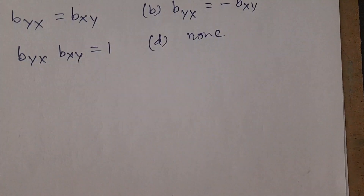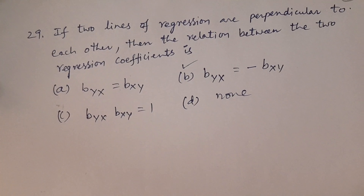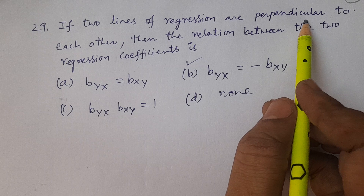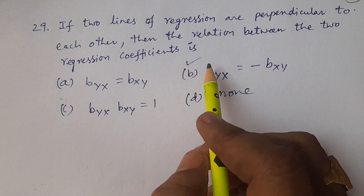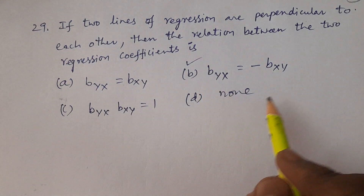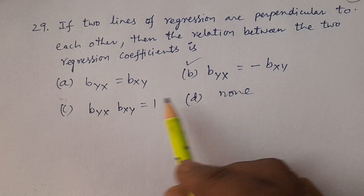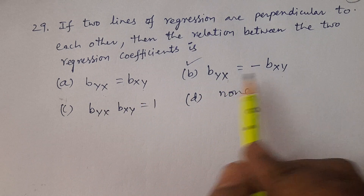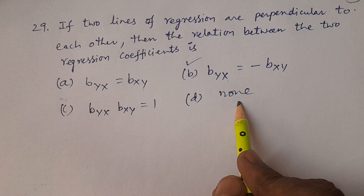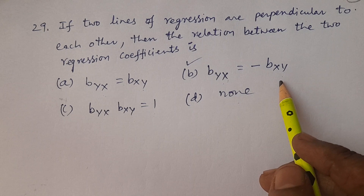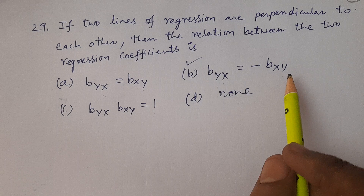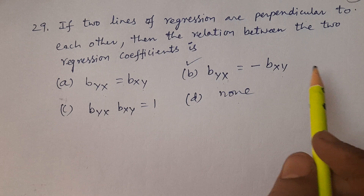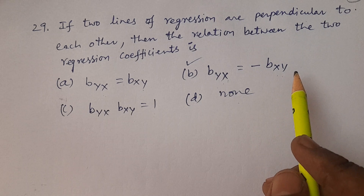Next, one more question — question number 29. If two lines of regression are perpendicular to each other, then what is the relation between the two regression coefficients? Options: A — byx equals bxy; B — byx equals minus bxy; C — byx into bxy equals 1; D — none. The answer is byx equals minus bxy. If they are perpendicular, perpendicular means 90 degree angle, R is equal to 0. Then byx equals minus bxy — the two regression coefficients, one is the negative value of the other.